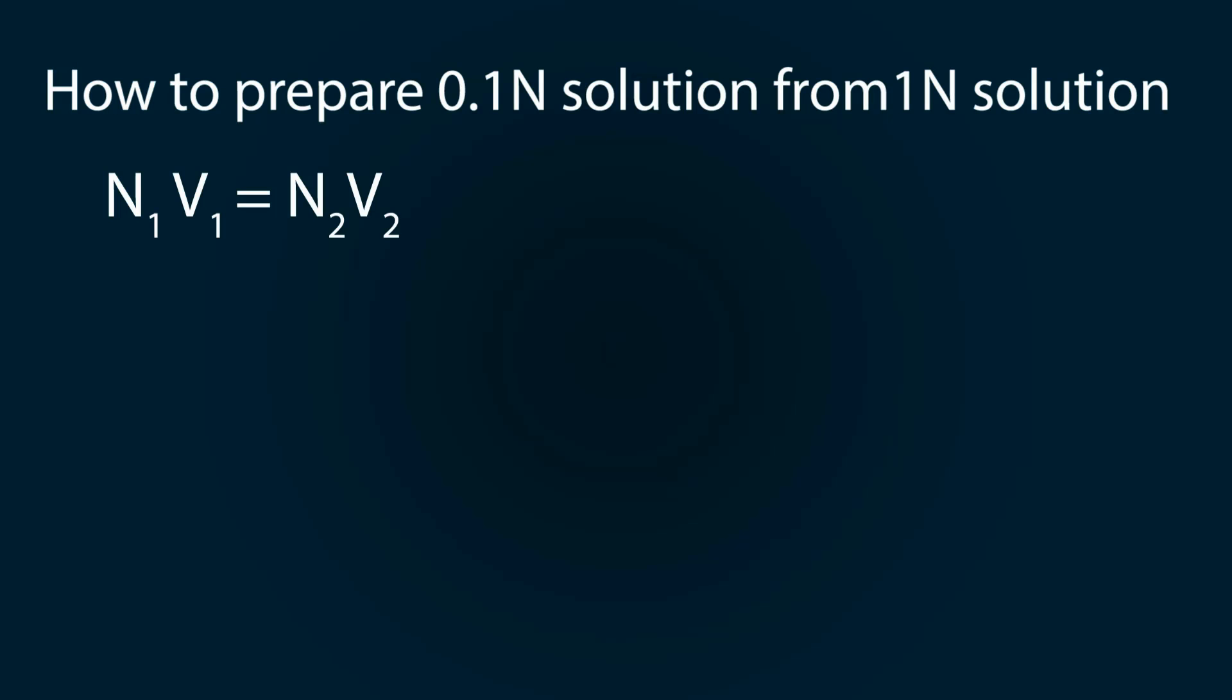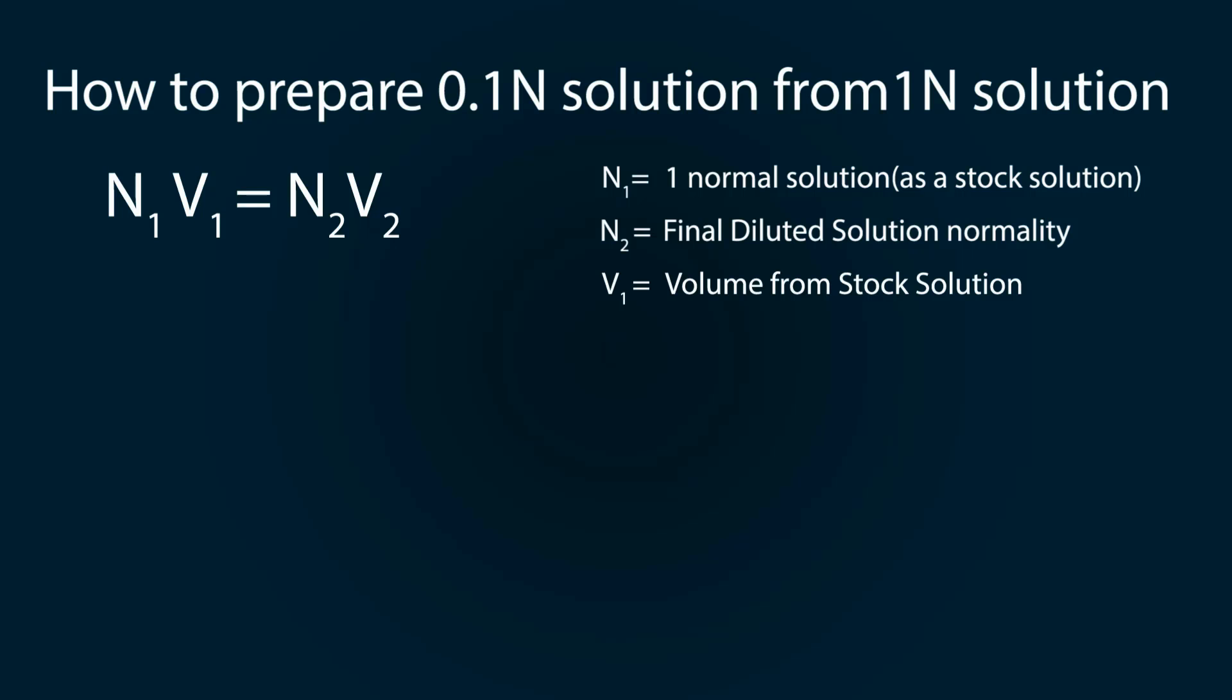How to prepare 0.1N solution from 1N solution: The formula is N₁V₁ = N₂V₂, where N₁ is one normal solution as stock solution, N₂ is final diluted solution normality, V₁ is the volume from stock solution, and V₂ is the final solution volume.